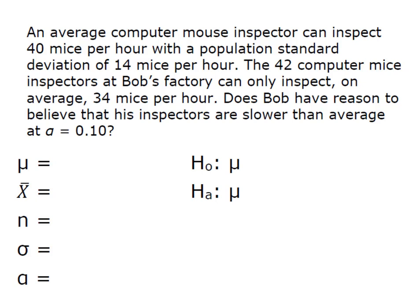The average computer mouse inspector can inspect 40 mice per hour with a population standard deviation of 14 mice per hour. 42 computer mice inspectors at Bob's factory can only inspect on average 34 mice per hour. Does Bob have reason to believe that his inspectors are slower than average at an alpha of 0.10?